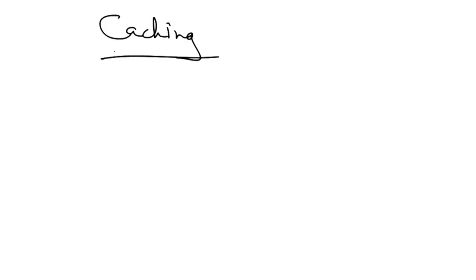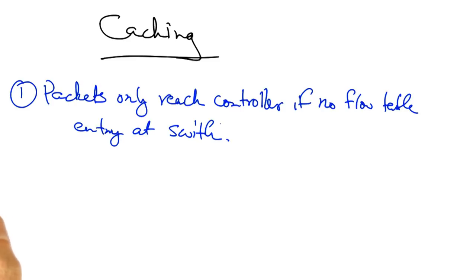It is important to emphasize the performance implications of caching the decisions at the switch. So packets only reach the controller if there's no flow table entry at the switch.